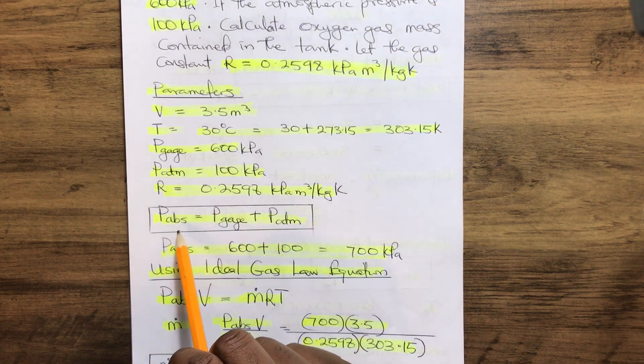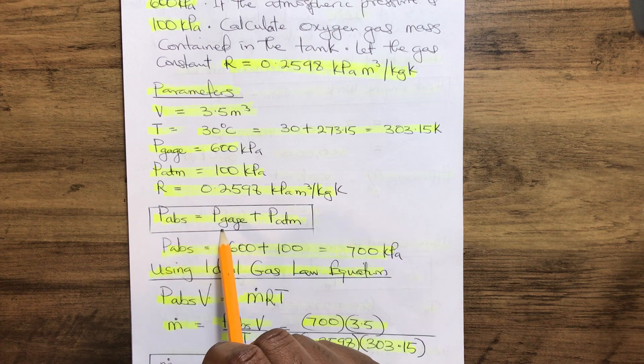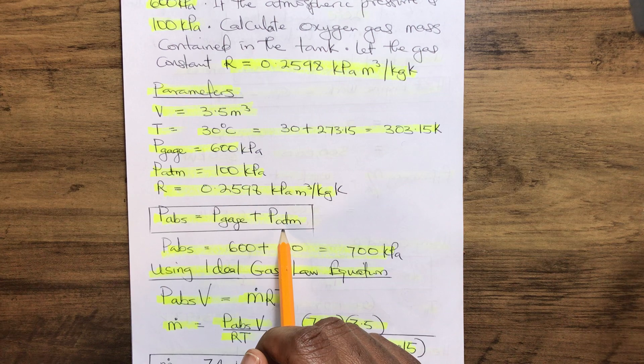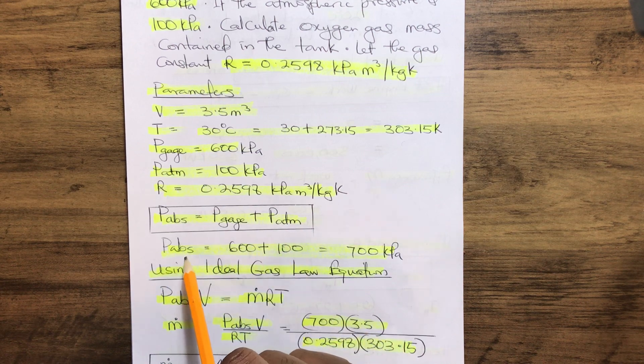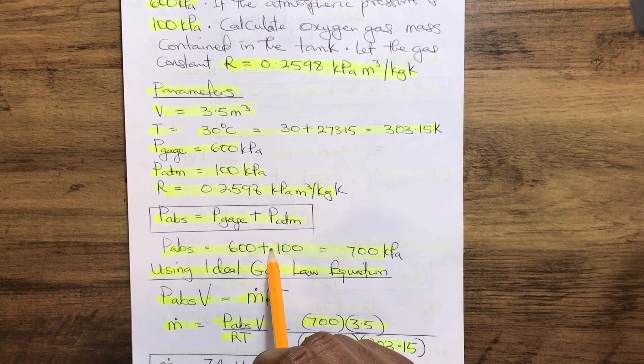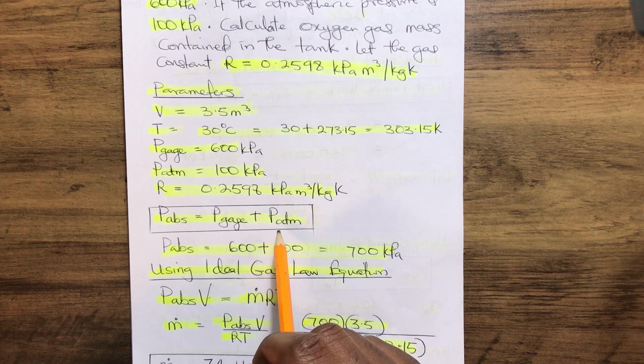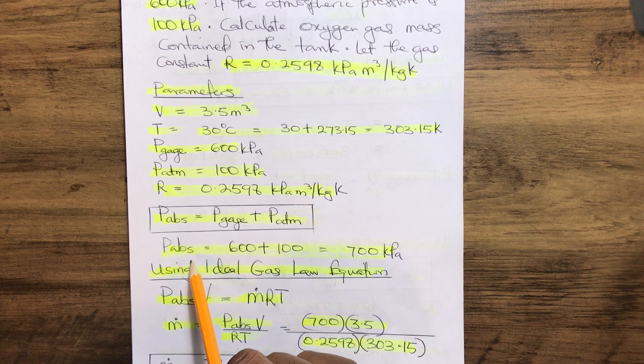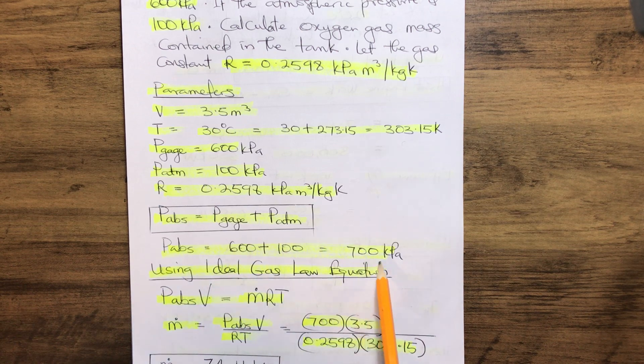Absolute pressure P_abs equals gauge pressure plus atmospheric pressure. Therefore, we add the gauge pressure and atmospheric pressure to find our absolute pressure, which gives us 700 kPa.